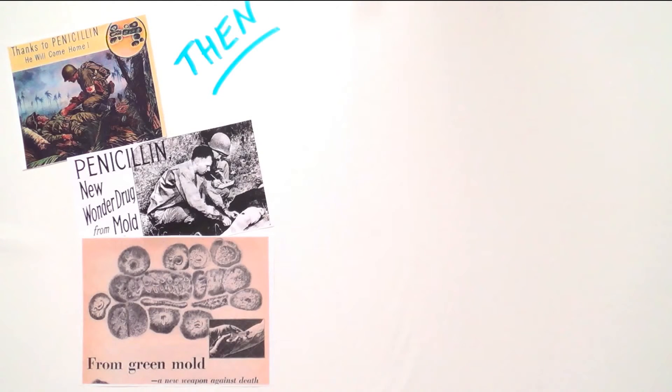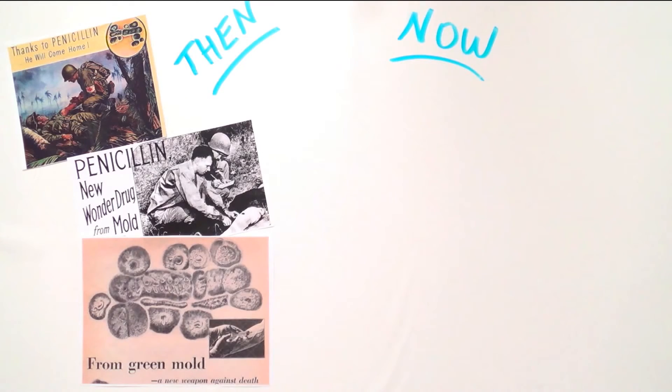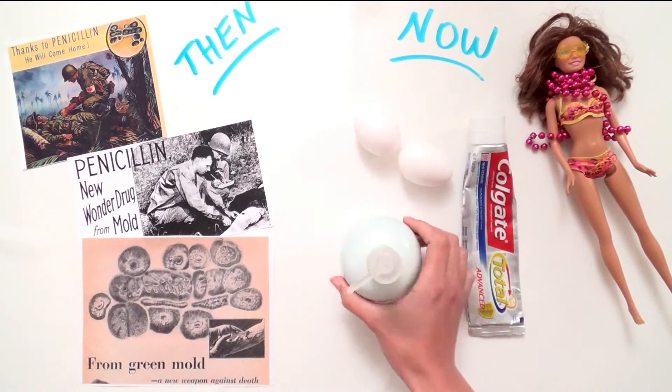Over time, antibiotics were co-opted for many other purposes, and now they are used everywhere, including in farming, plastic toys, toothpaste, hand soap, and even toilet handles.